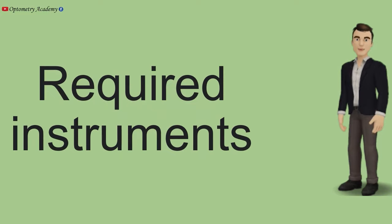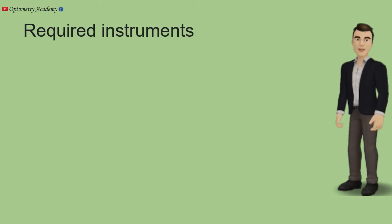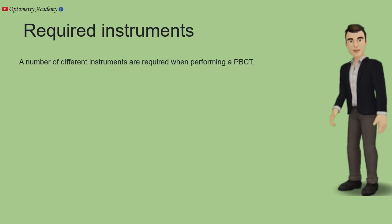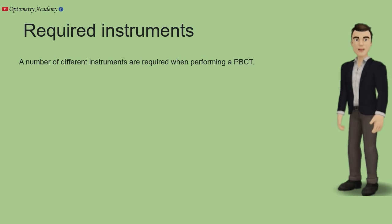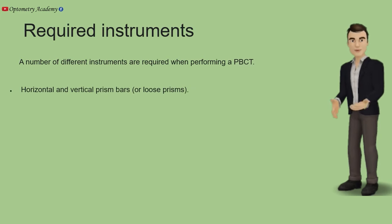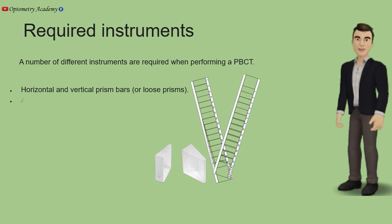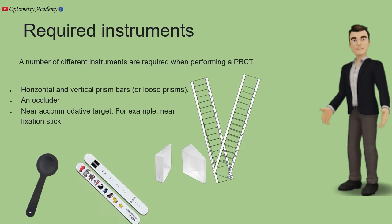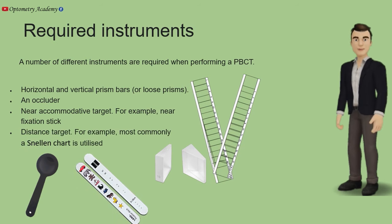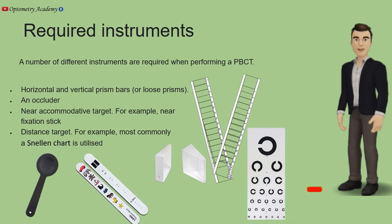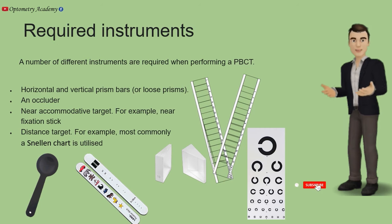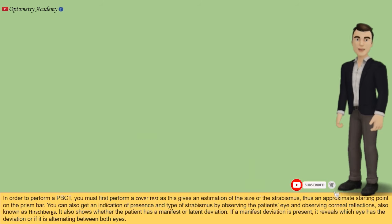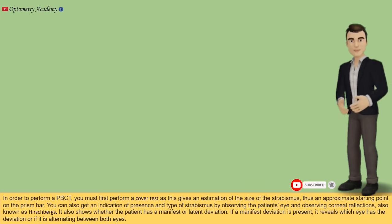A number of different instruments are required when performing a PBCT: horizontal and vertical prism bar or loose prisms, an occluder, a near accommodative target such as a near fixation stick, and a distant target — most commonly a single letter on a Snellen chart.